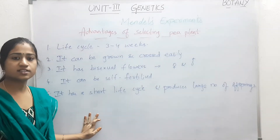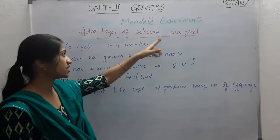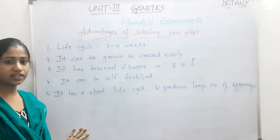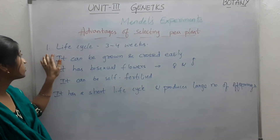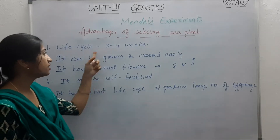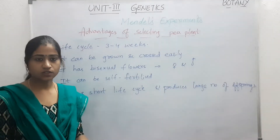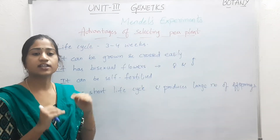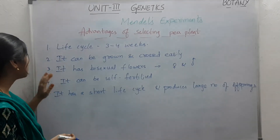Reasons for the selection of pea plant for hybridization experiments — advantages of selecting the pea plant as chosen by Mendel. Here are 5 reasons for his selection. First, the life cycle is very short — it completes its life cycle in 3 to 4 weeks. If the life cycle is very short, we can study more and more generations, and if we study more generations in a short time, the results will be authentic.